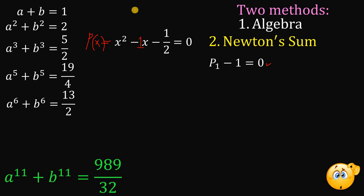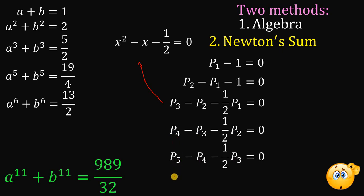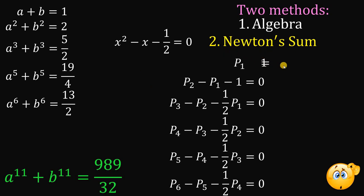From that equation, p sub 1 equals a plus b, which is the sum of the roots equals 1. Using Newton's Sum again, p sub 2 minus p sub 1 minus 1 half times 2 equals 0. Negative 1 half times 2 is just negative 1. We can now continue solving. Using the value of p sub 1 equals 1, we substitute. Negative 1 minus 1 is negative 2. Adding 2 to both sides, we get p sub 2 equals 2, which is our expectation because a squared plus b squared equals 2.